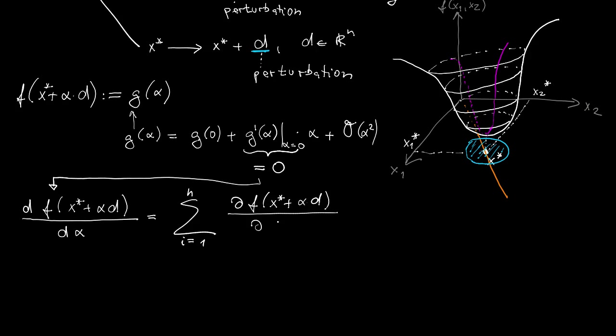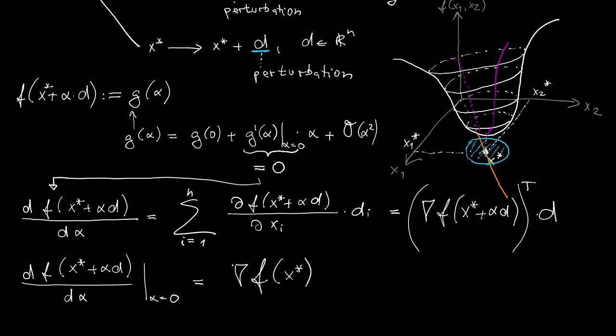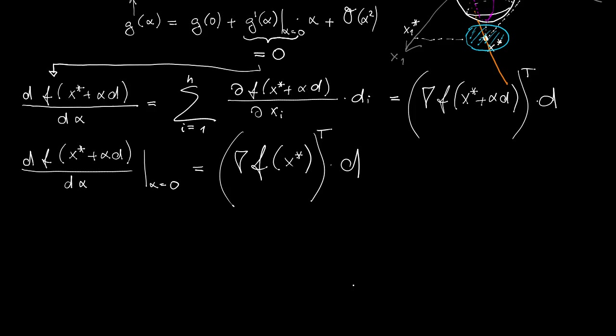In this particular case, this is what we get. Which we can rewrite in a compact vector form like this. Gradient transposed times d, where d is a full vector. If I now evaluate this total derivative at alpha equal to 0, that means at the critical point, the above expression specializes to just gradient of f evaluated at x star and inner product with the vector d. So the first order necessary conditions are obviously that the gradient must be equal to 0.